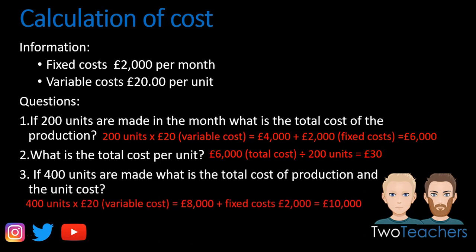For the final question, we are making 400 units, so 400 × £20 per unit gives a total variable cost of £8,000. Adding the £2,000 fixed cost gives a total production cost of £10,000. To find the unit cost, we divide £10,000 by the 400 units, giving a total unit cost of £25 per unit.